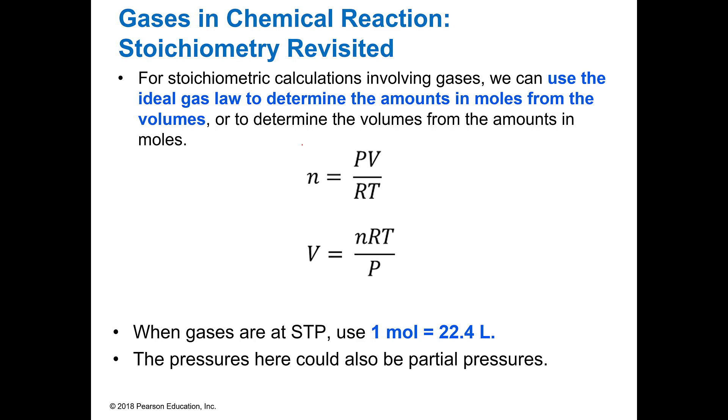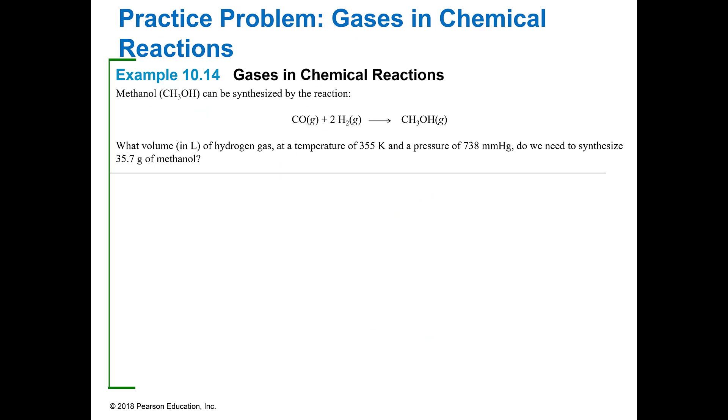So the number of moles is equal to PV divided by RT. We also know that at STP, one mole is 22.4 liters, in case we need that. Let's look at a practical example of this.